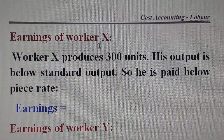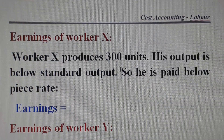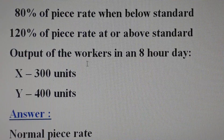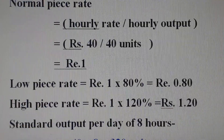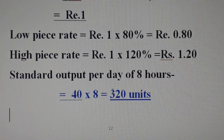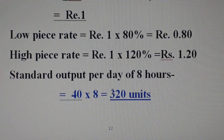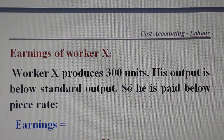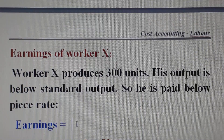Here are the earnings of worker X. Worker X produces 300 units in an 8-hour day. Since 300 units is below the standard output, his output is below standard. Therefore, he is paid at the lower piece rate, which is Rs. 0.80 per unit.